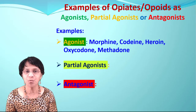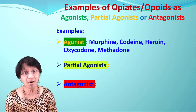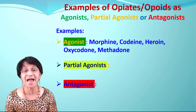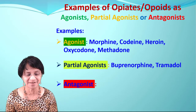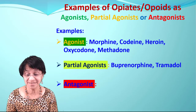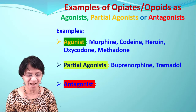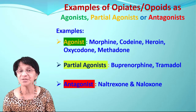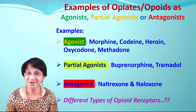Here are the examples for each category. Full agonists: morphine, codeine, heroin (diamorphine), oxycodone, and methadone — these bind very tightly to the receptor. Partial agonists: buprenorphine and tramadol. Antagonists: naltrexone and naloxone.